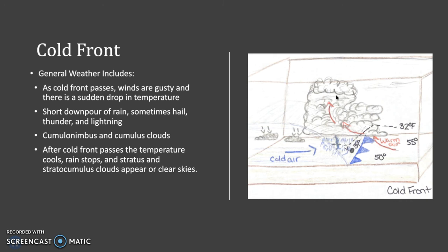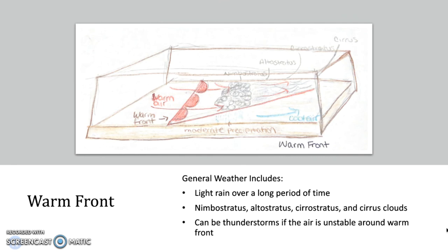As the cold front passes, winds are pretty gusty and there will be a sudden drop in temperature. When it passes, the temperature cools and the rain will stop, and either stratus or stratocumulus clouds will appear, or there will be clear skies.